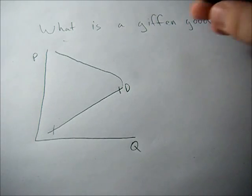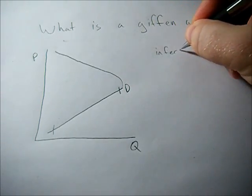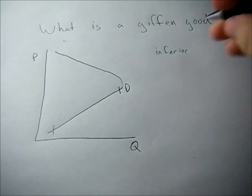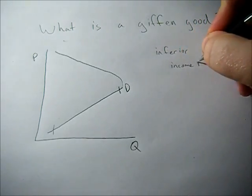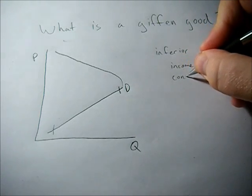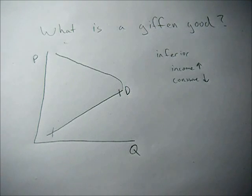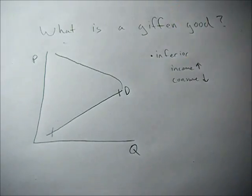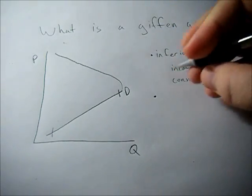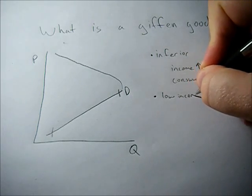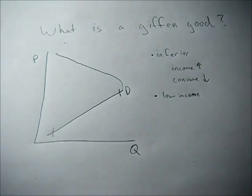So what makes a Giffen Good? First, the good has to be inferior which means that as income goes up we want to buy less of the good. So an example here could be Top Ramen or potatoes or something very cheap that we really don't want to buy but because we're poor we buy to sustain ourselves. So the good has to be inferior and the consumer has to have a low income. So they don't have a choice as to whether they can buy that good or not.